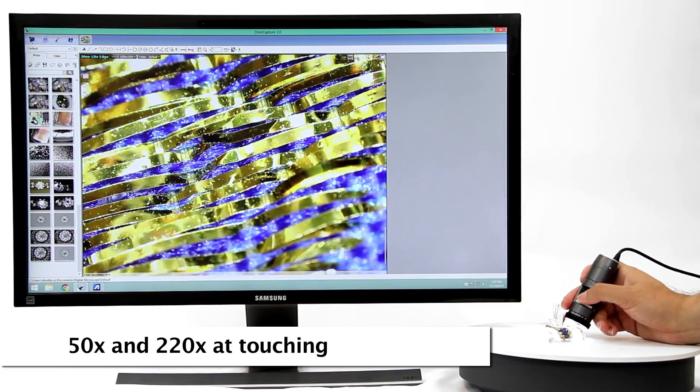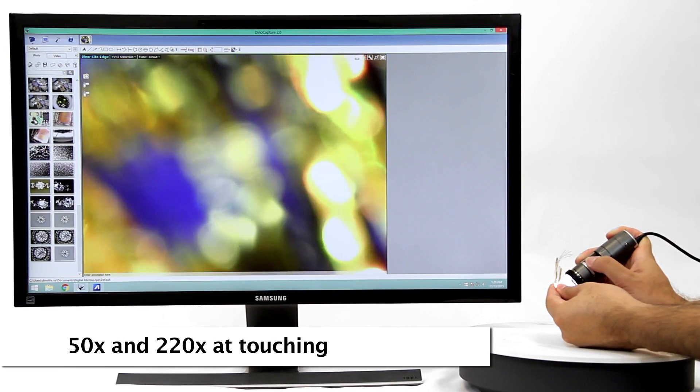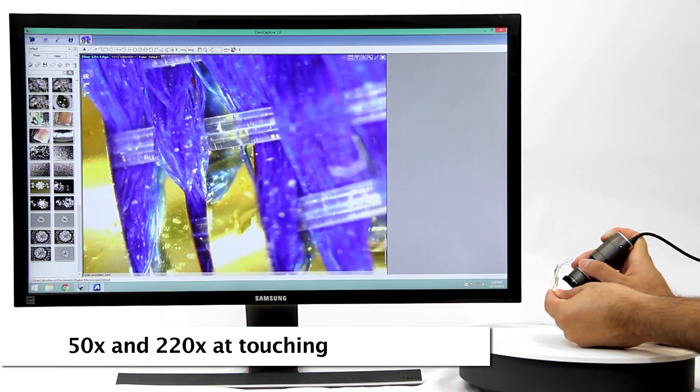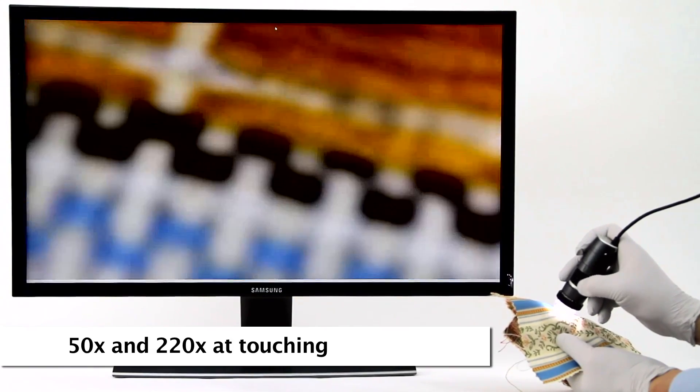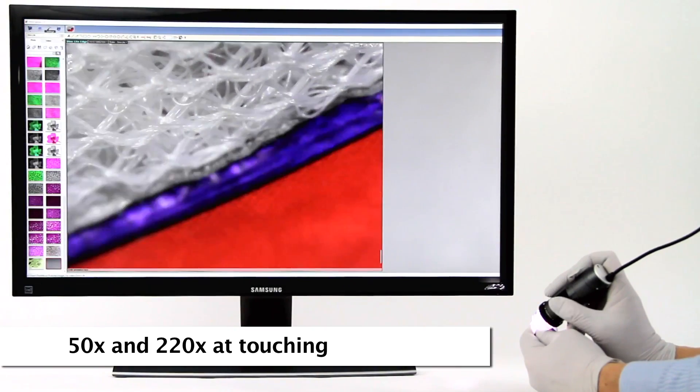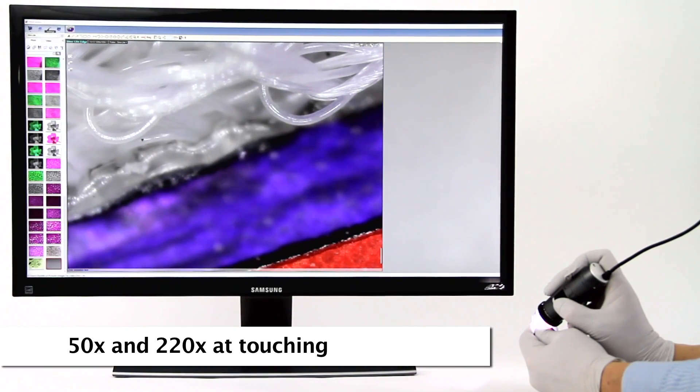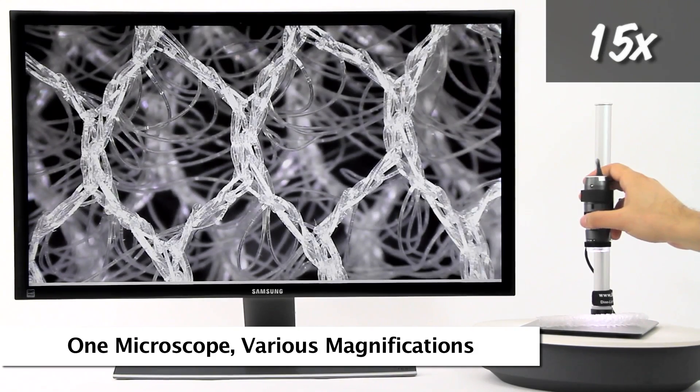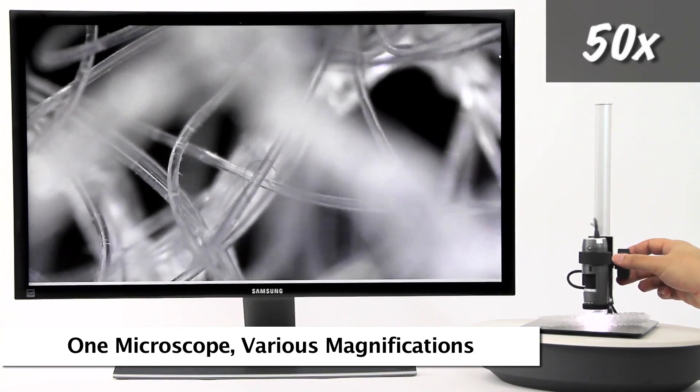Standard Dynolite working distance allows for 50 times and 220 times magnification when the end of the Dynolite nozzle is in contact with the object being viewed. This is an example of the standard working distance and corresponding magnification examples.